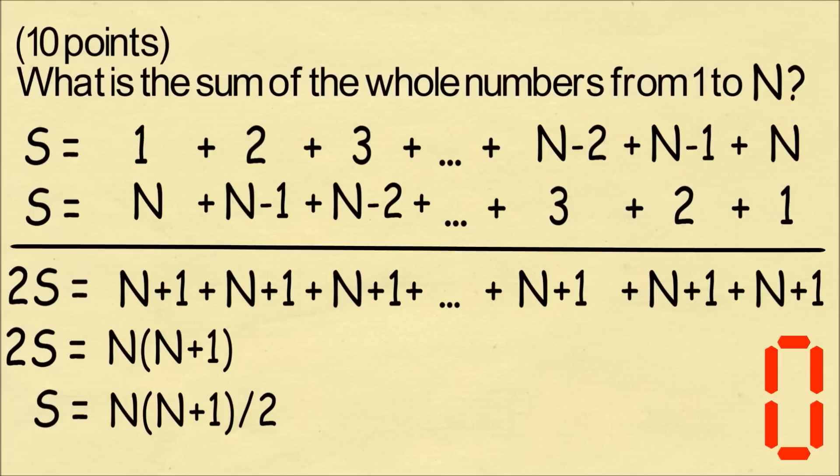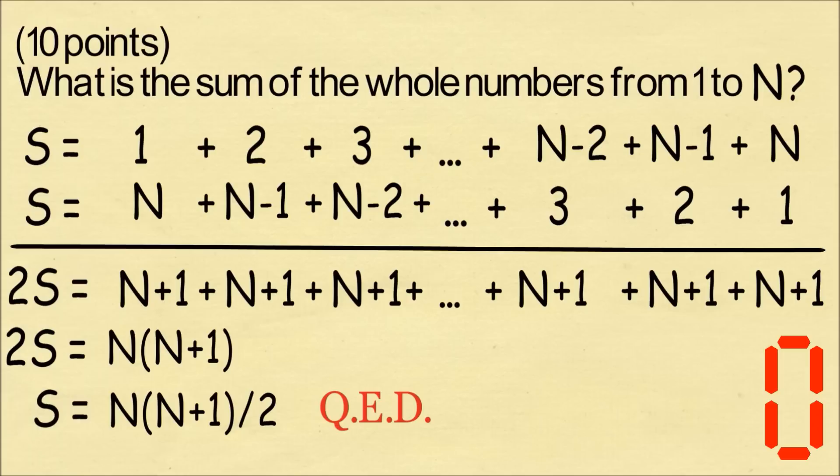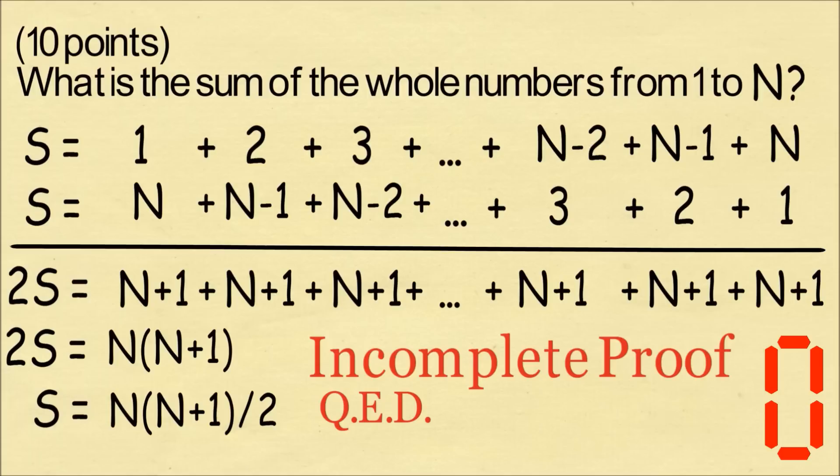And Gauss needs to finish this proof. He only has a few seconds. Oh no! He has forgotten to write QED. That is a requirement. We've all seen it before. This play is going to be under review, but the refs have ruled this is an incomplete proof. Gauss did not complete the proof with the symbol.